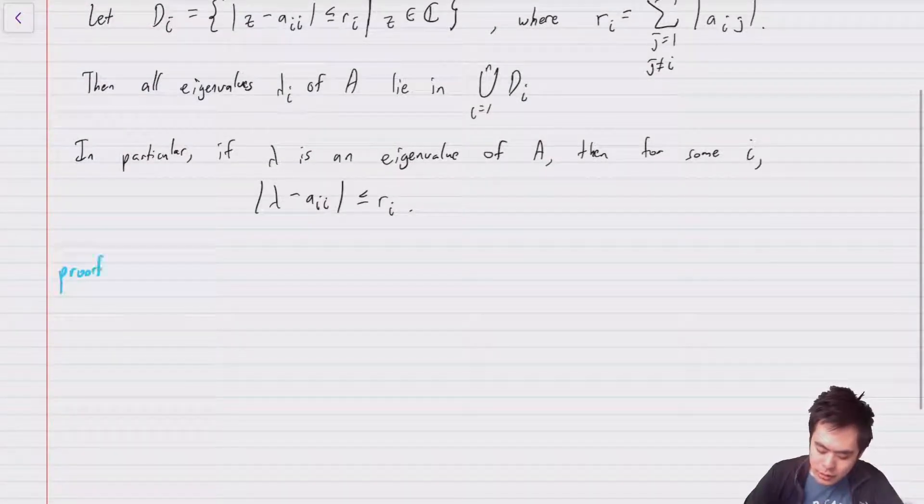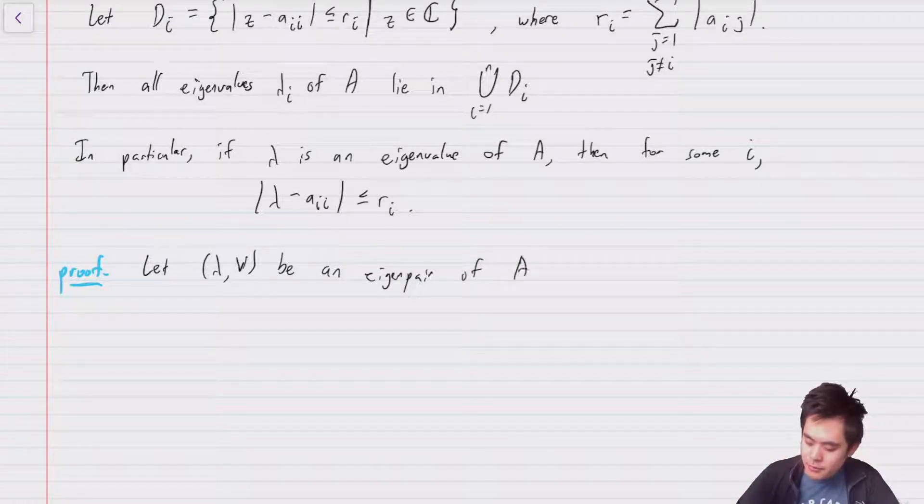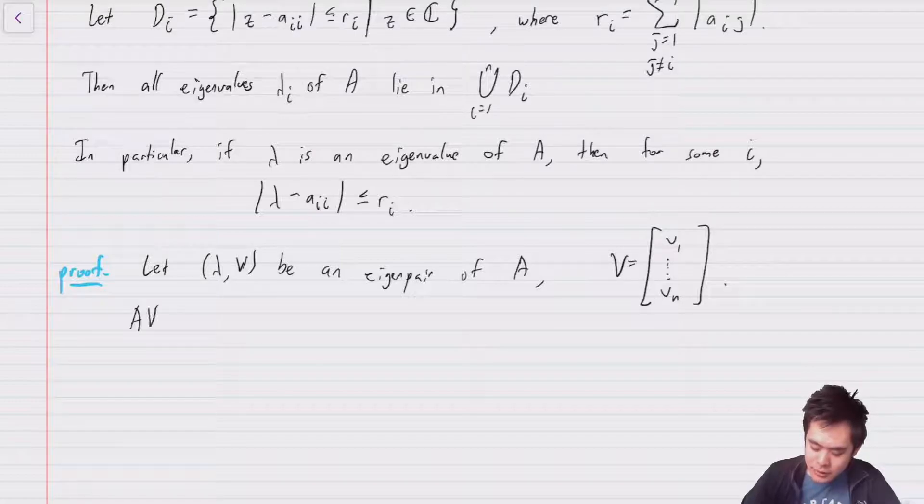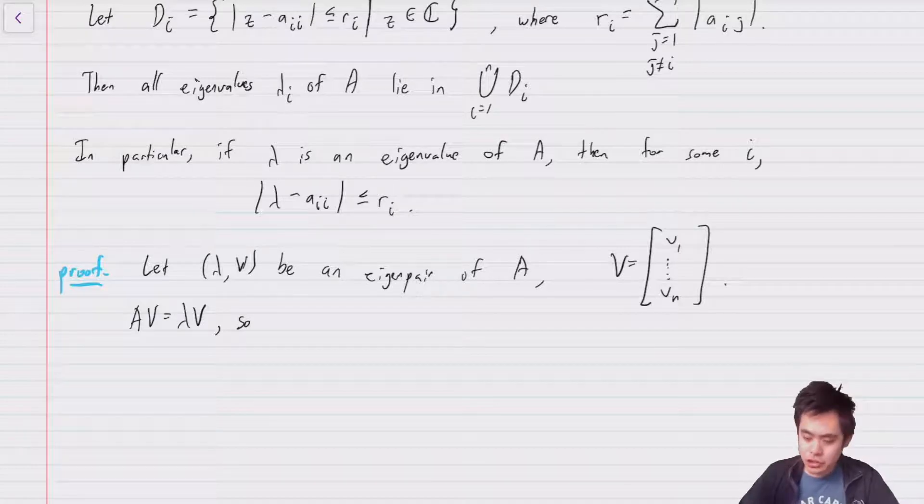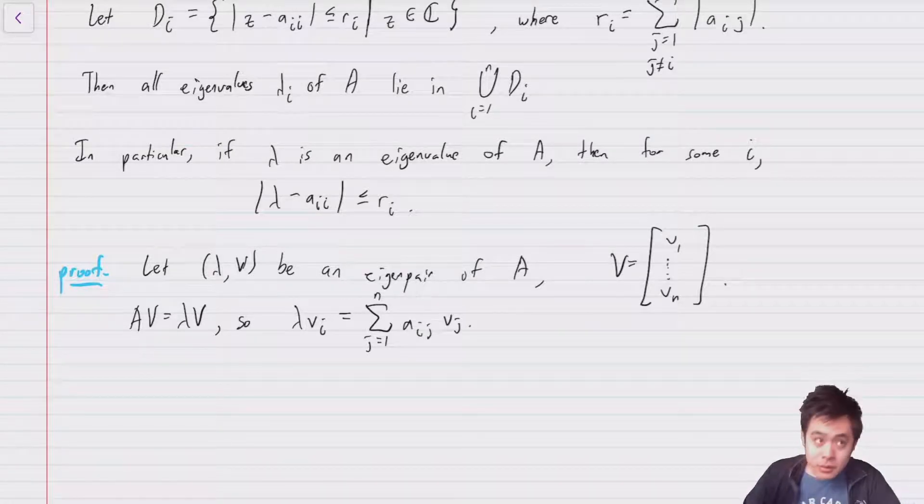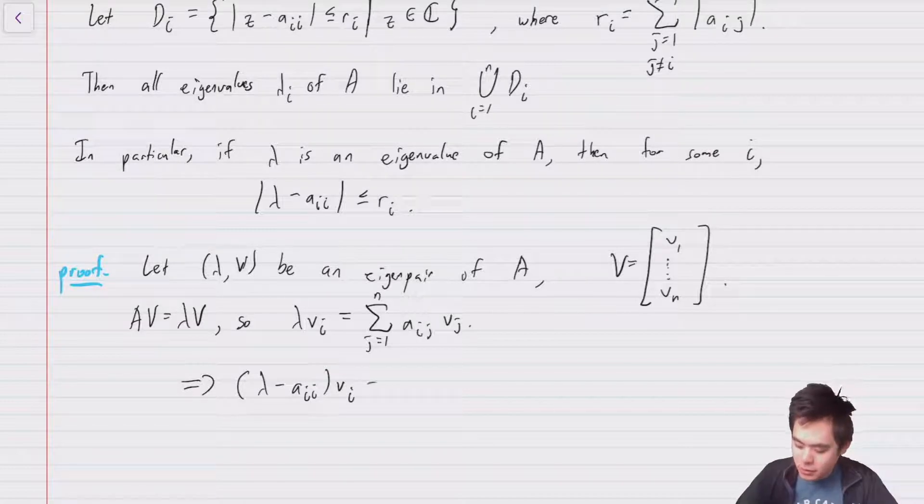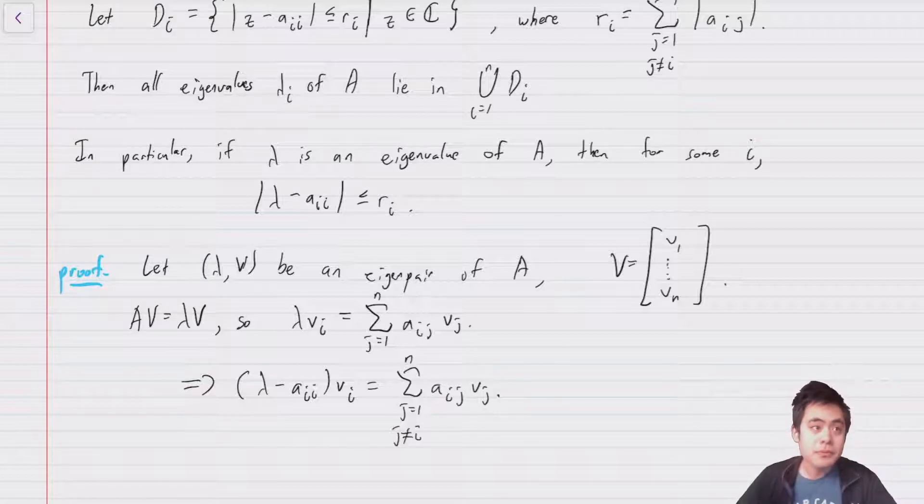The proof of it is fairly elementary, though there's a couple of slightly unintuitive steps. So we'll let (λ, v) be an eigenpair of A, where v is going to be a column vector v_1 through v_n. So obviously that means that Av = λv. So if you rewrite this out in index notation, you have for each entry v_i, λv_i is equal to the sum over j equal 1 to n of a_{ij}v_j. But of course, you can separate this out and you can move the entry that corresponds to j equal to i over to the left hand side. And so you end up with (λ - a_{ii})v_i = Σ(j≠i) a_{ij}v_j.